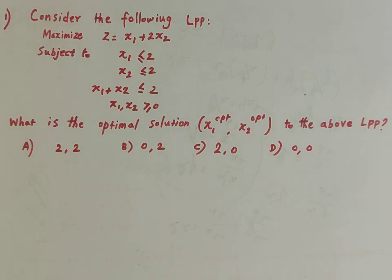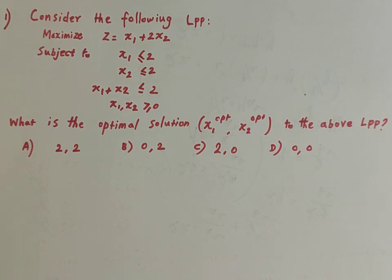Since there are two variables, we can solve this graphically. The constraints convert to straight lines: x1 = 2, x2 = 2, and x1 + x2 = 2. The third constraint forms a straight line. We find the point of intersection with the x1 and x2 axes.